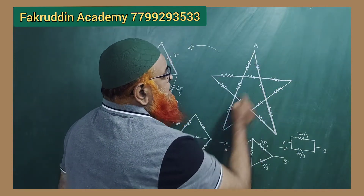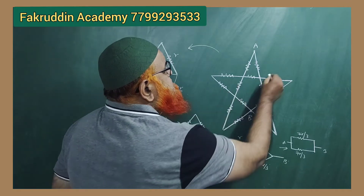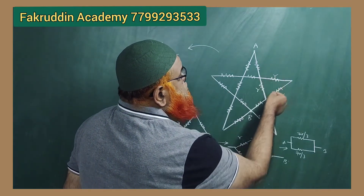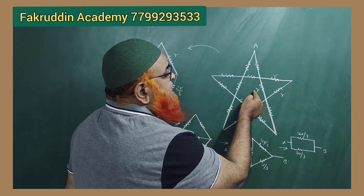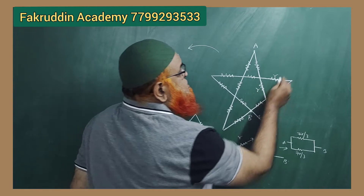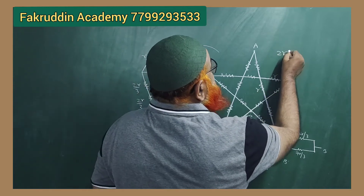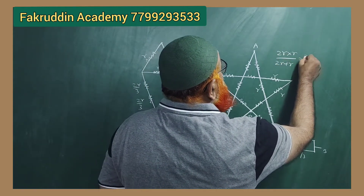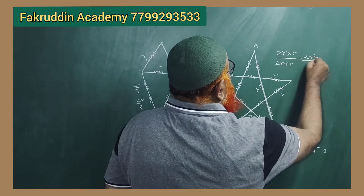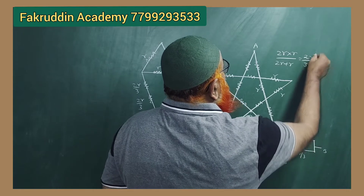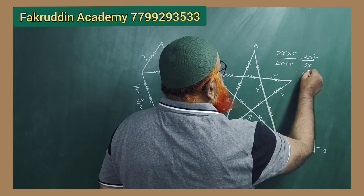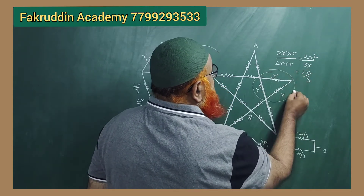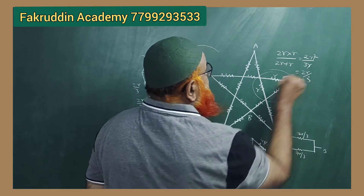If you consider this R, R, and R — these two R's are in series giving 2R, and that is in parallel with R. So you can write 2R into R divided by 2R plus R, which gives 2R squared by 3R, so this simplifies to 2R by 3.